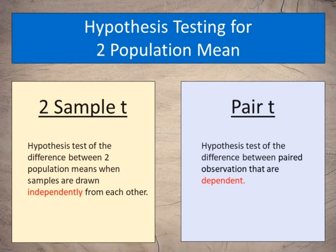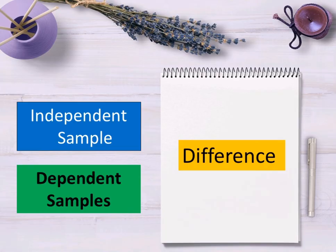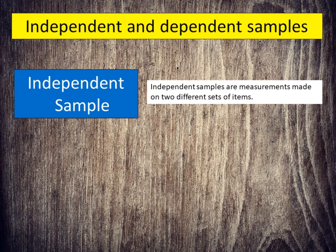When you conduct a hypothesis test using two random samples, you must choose the type of test based on whether the samples are dependent or independent. What is the difference between independent and dependent samples? Independent samples are measurements made on two different sets of items.